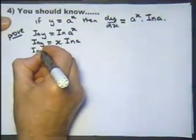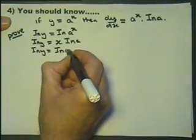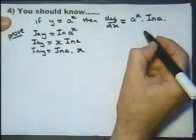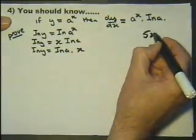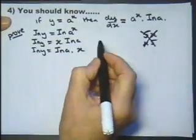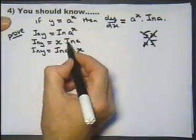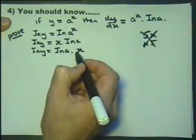Now for no real reason, I'm going to write this around the other way. Well, there is actually a reason - we normally write a number in front of the x. Let's suppose we had 5x, we'd write 5x like that, we wouldn't write it like that. We usually write the number in front, and a natural logarithm is in fact a number, albeit a decimal number, so I'm writing it around that way.